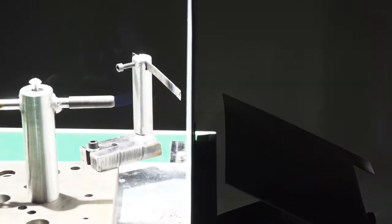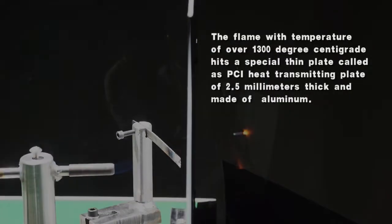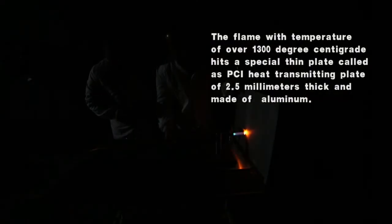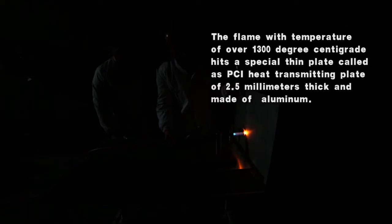The flame with temperature of over 1300 degrees centigrade heats a special thin plate called a PCI heat-transmitting plate of 2.5 millimeters thick and made of aluminum.